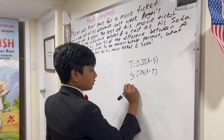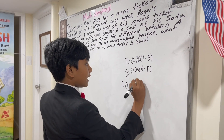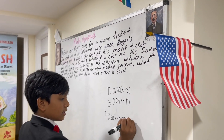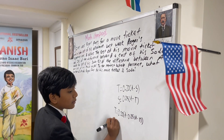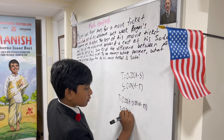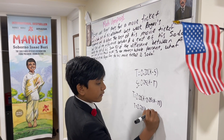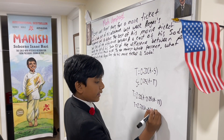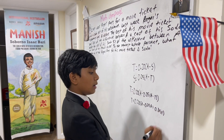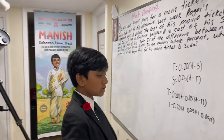If we plug S into T, we get T equals 0.20 times (A minus (0.05 A minus T)). This is just a bunch of time-consuming hairy algebra: 0.20A minus 0.05A minus 0.05A minus 0.05T — and minus minus becomes plus.